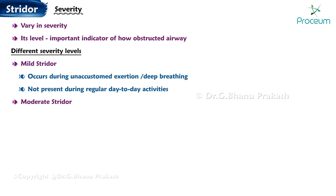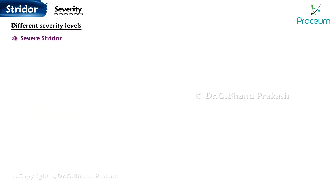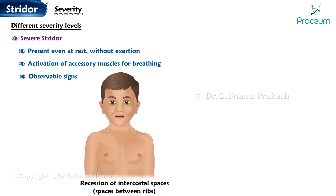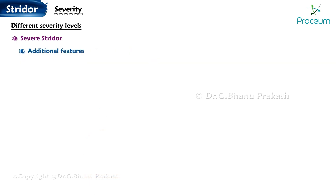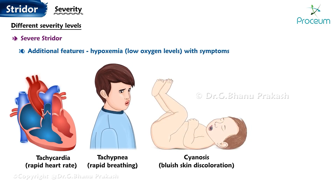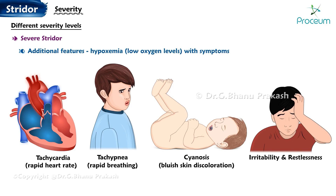Moderate Strider occurs with minimal exertion and may interfere with daily activities. Severe Strider is present even at rest without exertion, and may be accompanied by the activation of accessory muscles for breathing. Observable signs include the recession of intercostal spaces, the spaces between the ribs. Additional features may include hypoxemia, low oxygen levels, with symptoms like tachycardia, rapid heart rate, tachypnea, rapid breathing, cyanosis, blue skin discoloration, irritability, and restlessness.